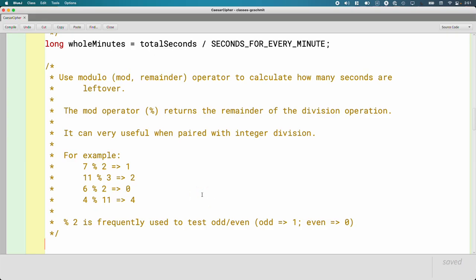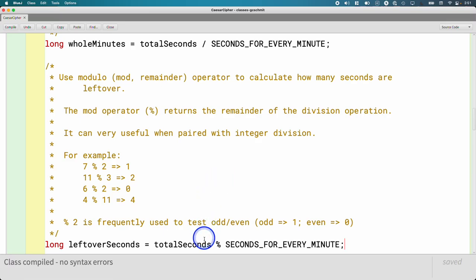Let's actually use this to calculate our leftover seconds. Let's create a new variable called leftoverSeconds. We're basically doing the same operands, totalSeconds and SECONDS_FOR_EVERY_MINUTE. But instead of doing integer division, we're gonna do the mod operator. So totalSeconds mod SECONDS_FOR_EVERY_MINUTE. If totalSeconds is 130, SECONDS_FOR_EVERY_MINUTE is 60, 130 mod 60 is gonna give us 10 leftover seconds. Which is perfect.